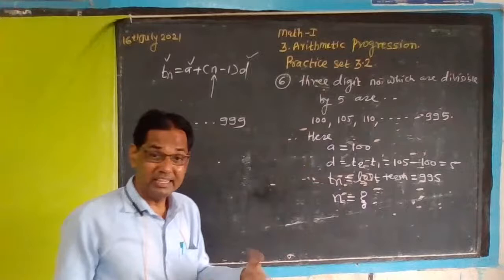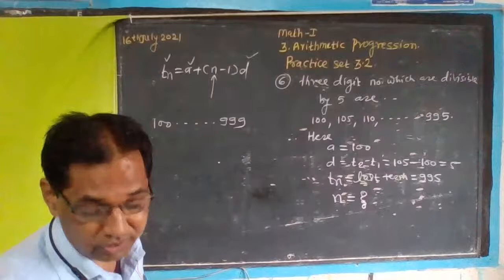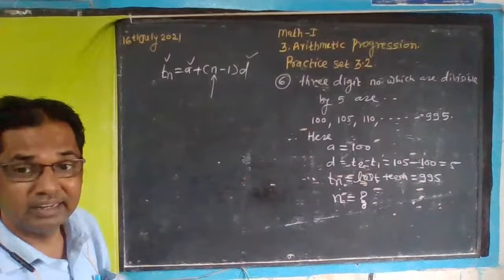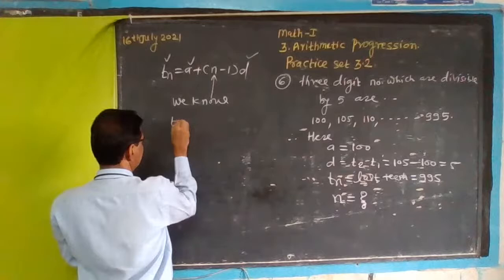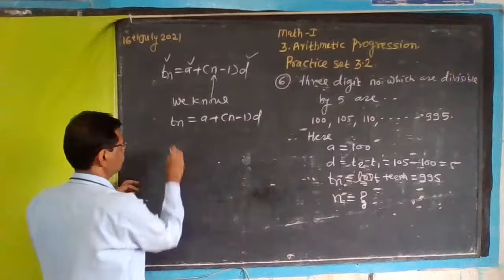Let's start with the formula: tn equals a plus n minus 1 into d. We know this formula for the nth term of an arithmetic progression.